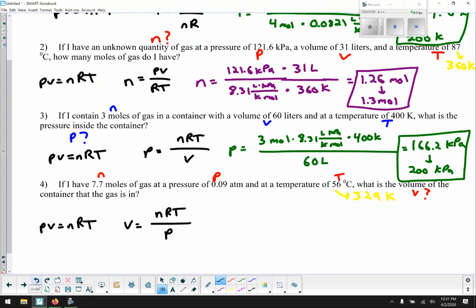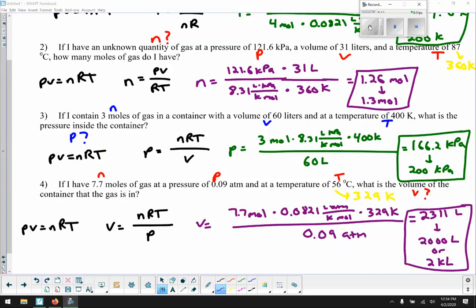So that's how we rearrange it. We have all those numbers. We just plug them in and do the math. So I will come back when that is complete. Okay, so when we do the math, 7.7 moles times 0.0821 liter atmospheres per Kelvin mole times 329 Kelvins divided by 0.09 atmospheres, we get 2,311 liters. And because of the one sig fig in the pressure, the 0.09 atmospheres, I would round that to 2,000 liters or 2 kiloliters because the metric system works nicely that way. And you can do that if you want. It's less writing. Any of those answers would be correct, though. If you didn't round, I'm not taking points off.